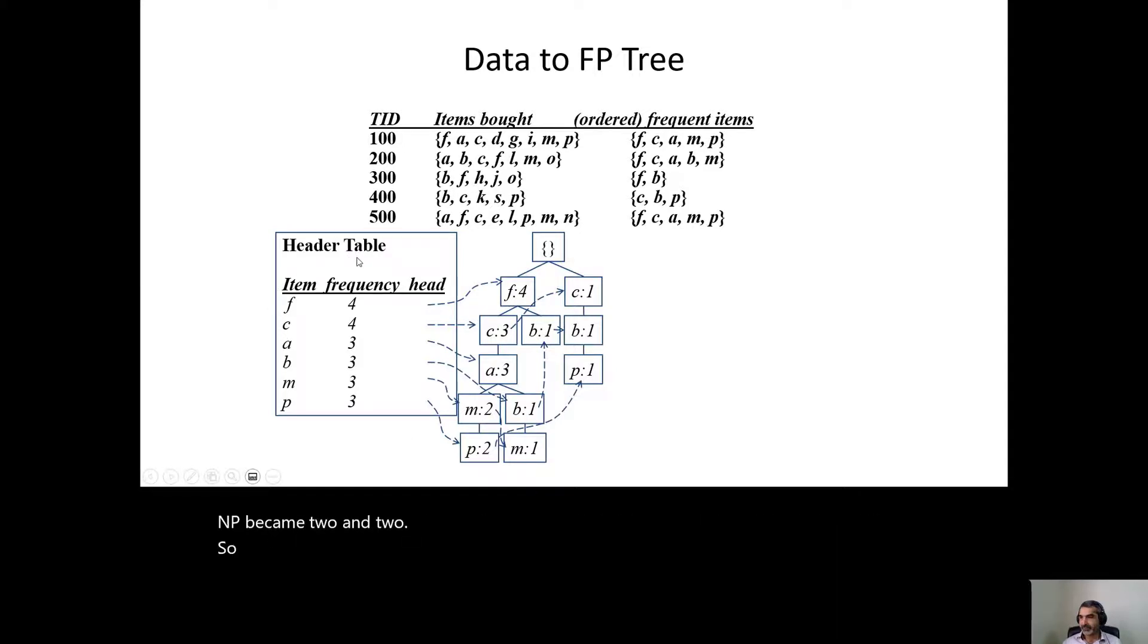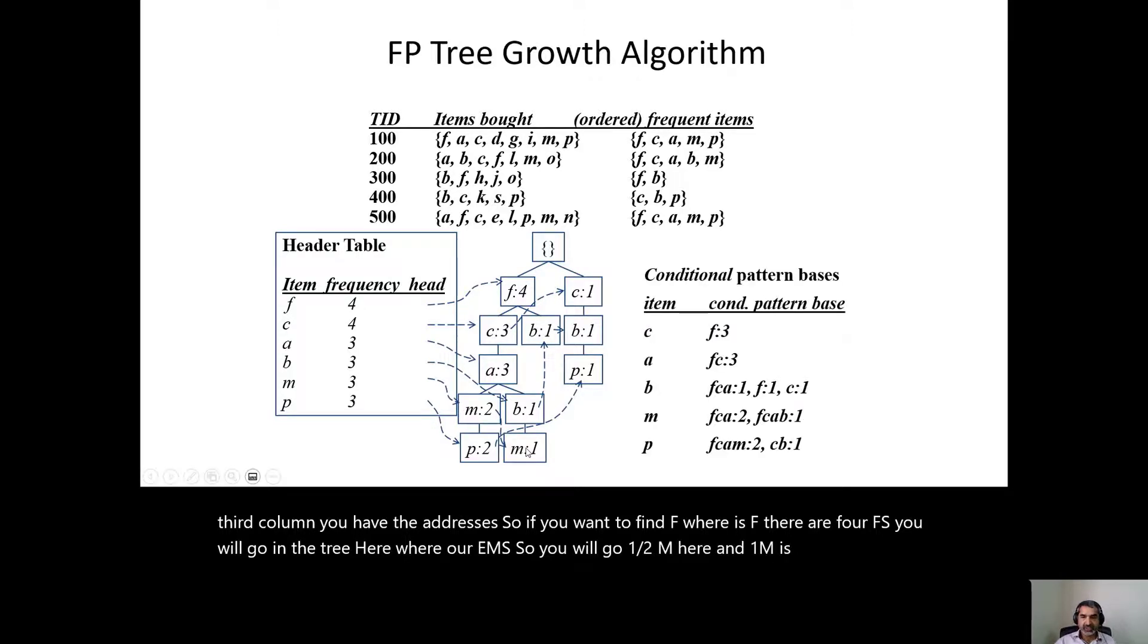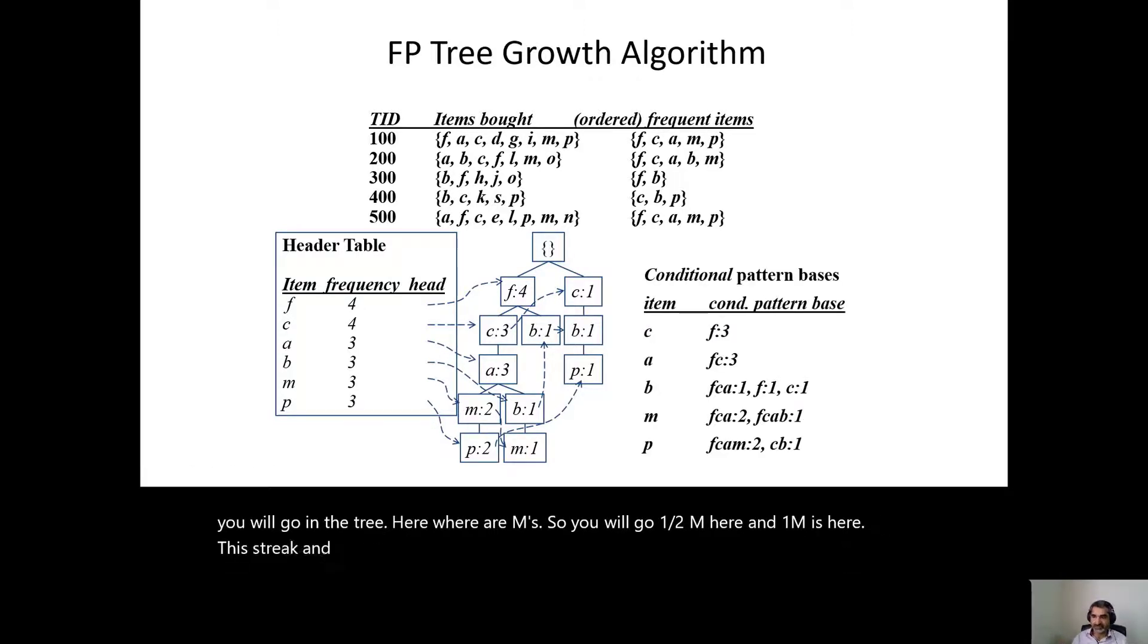So look at the header table now. You have in one column all unique items. In the next column, you have all the frequencies. In the third column, you have the addresses. So if you want to find F, where is F? There are four F's. You will go in the tree here. Where are M's? So you will go to 2M here and 1M is here. This tree can wonderfully help us find the association rules.